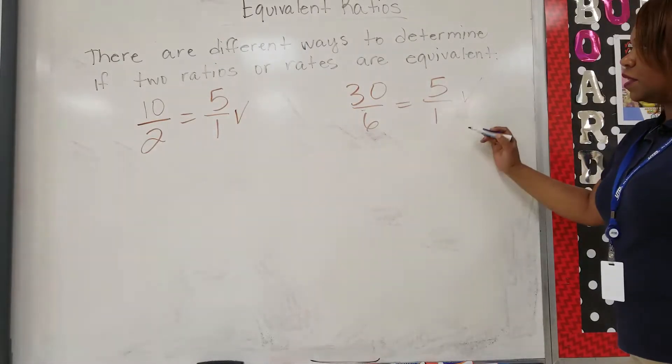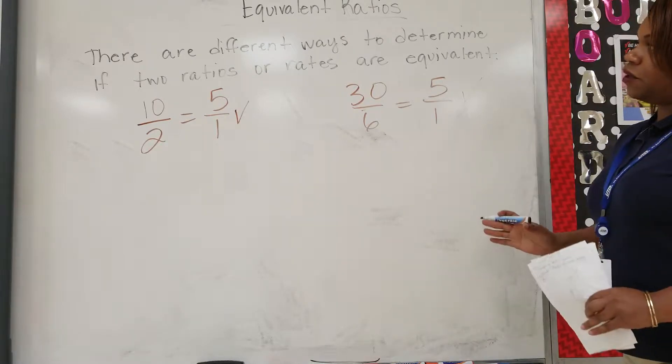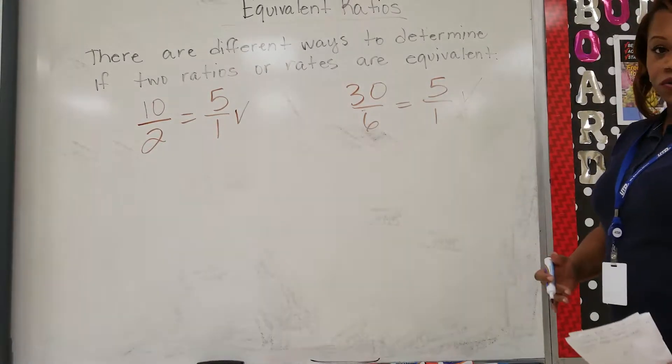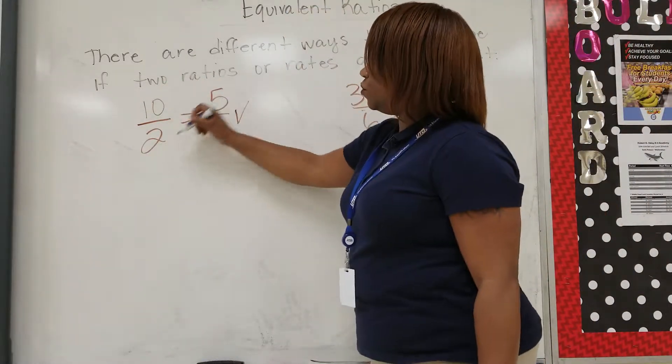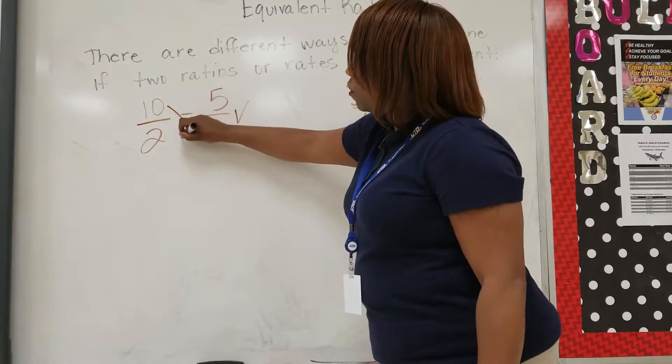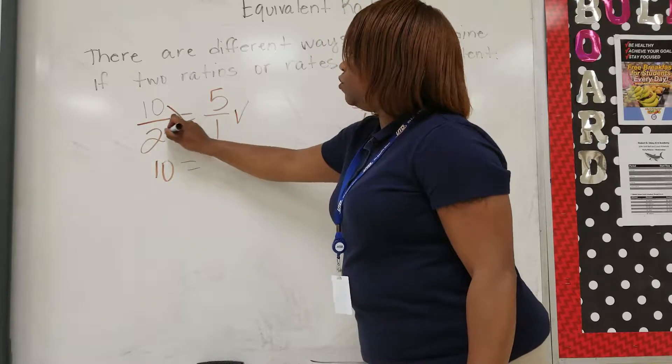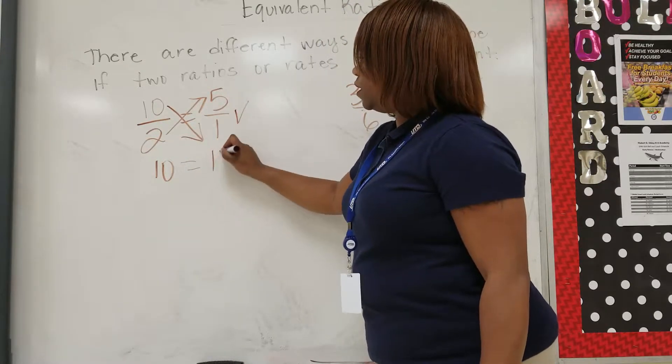The second way to find out if two ratios are equivalent is to cross multiply. Here you have 10 to 2, here you have 5 to 1. You cross multiply 10 times 1, which will be 10. You then cross multiply here, 2 times 5 is 10.